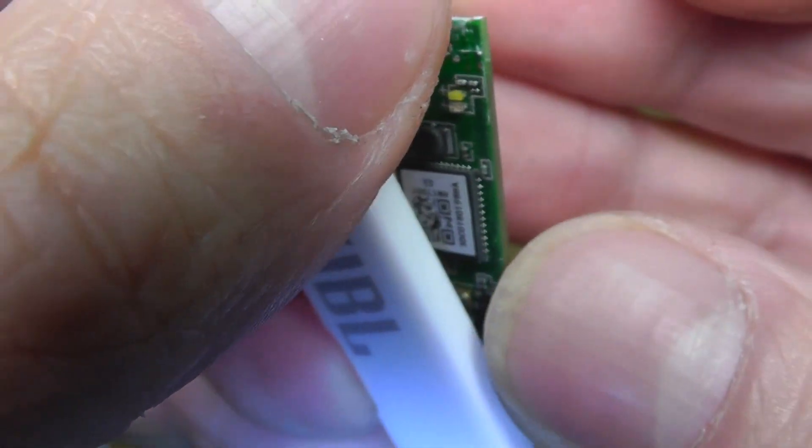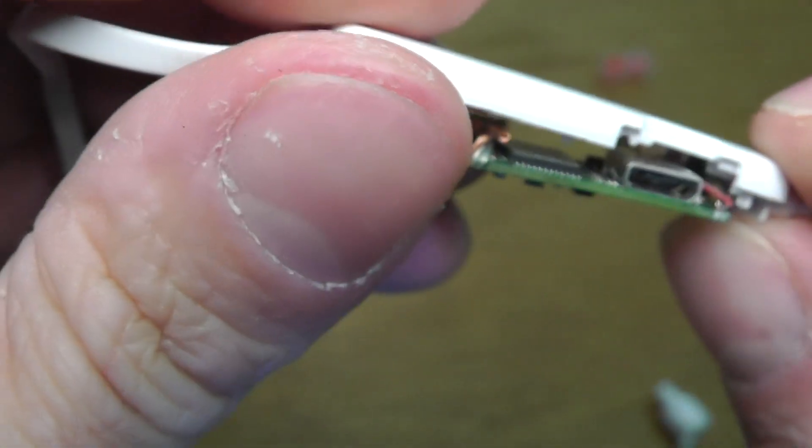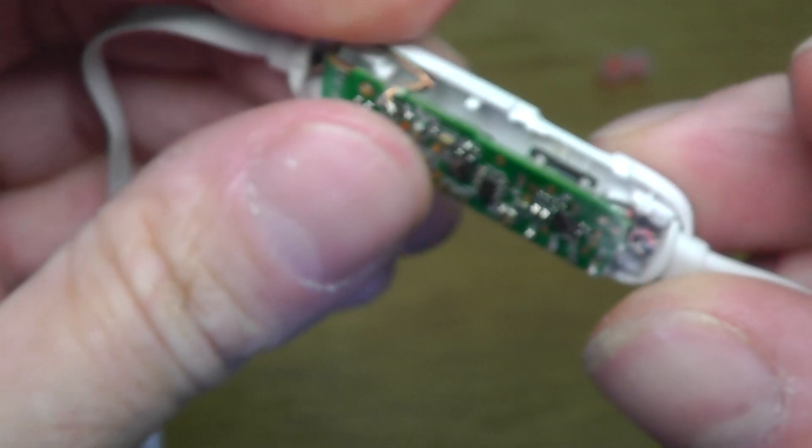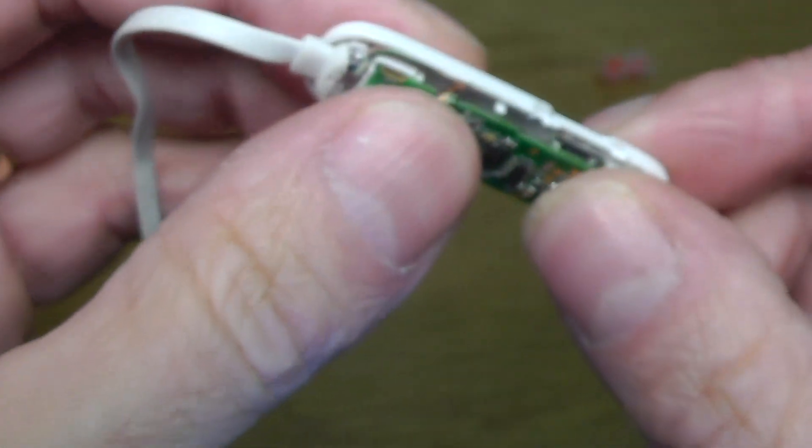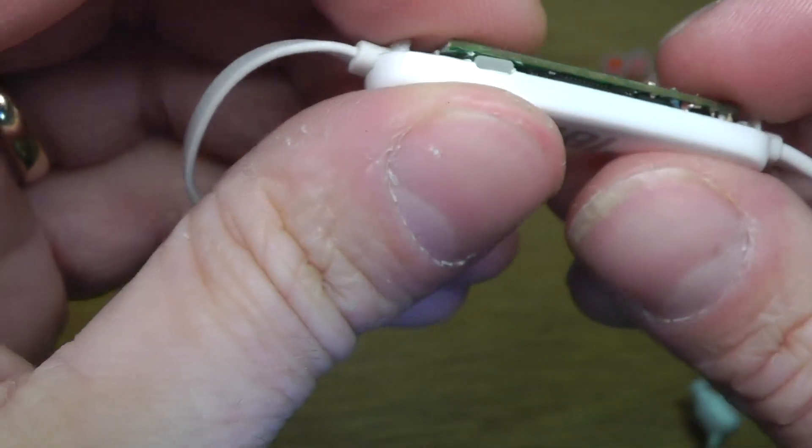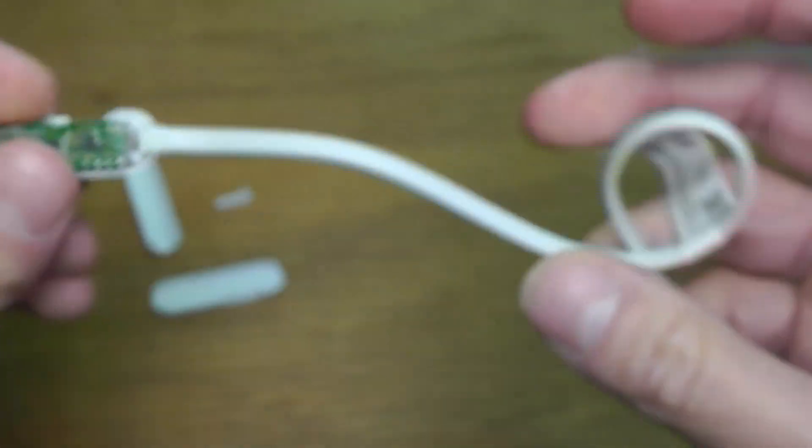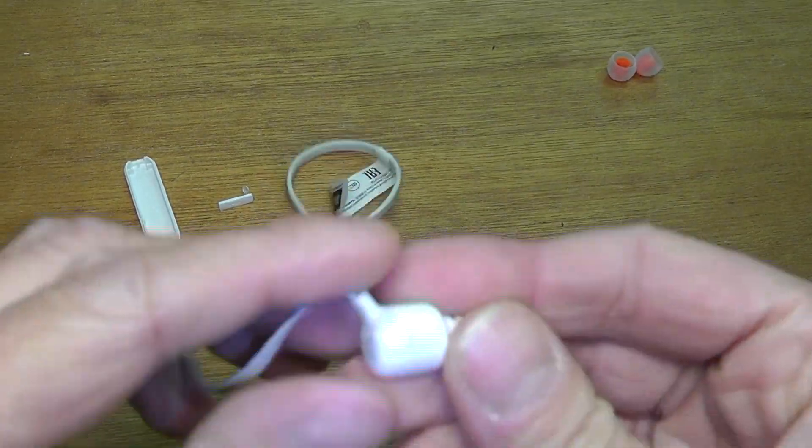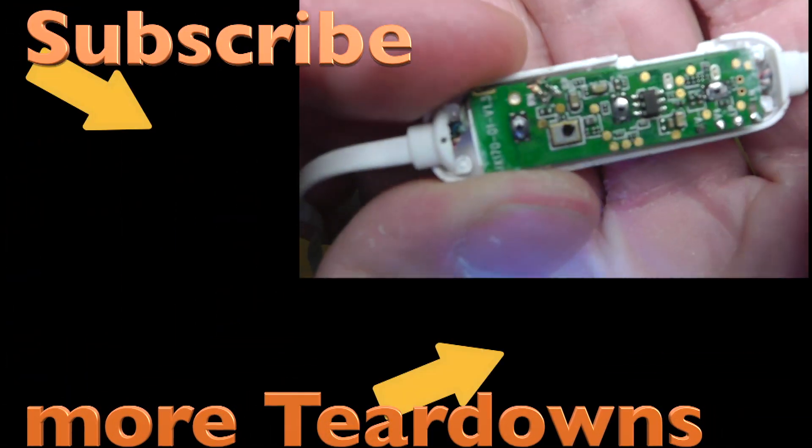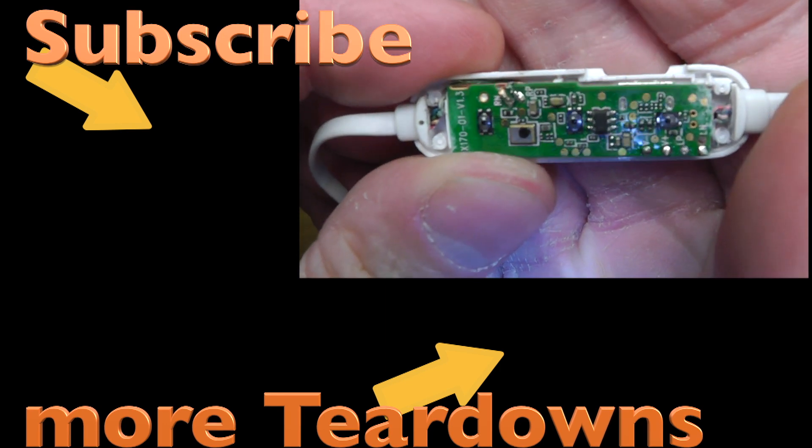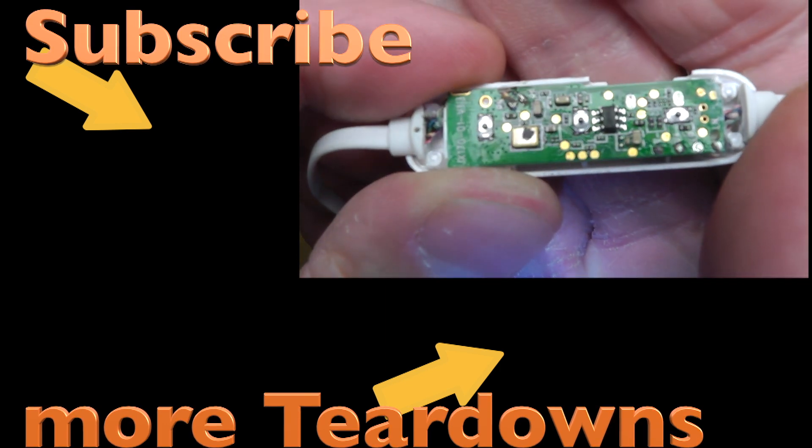This should be it for this video. As I said, I'm not going to take apart the headphones, the earpieces themselves. I just don't want to - I don't feel like really breaking these. I don't really like the headphones, so I don't want to ruin them completely. I hope this video was helpful. Check out my other JBL videos, and if you have a question or comment, write it below. Don't forget to like and subscribe.